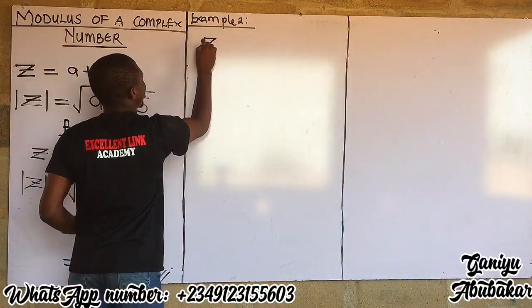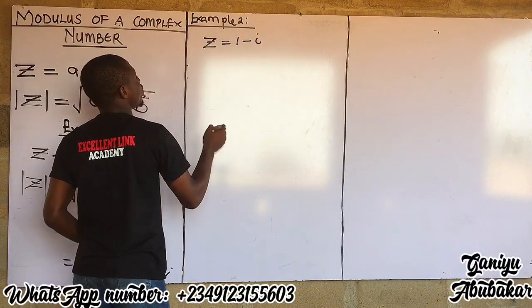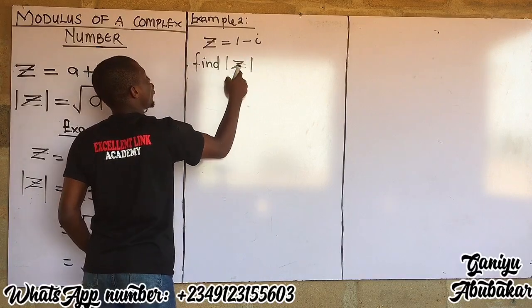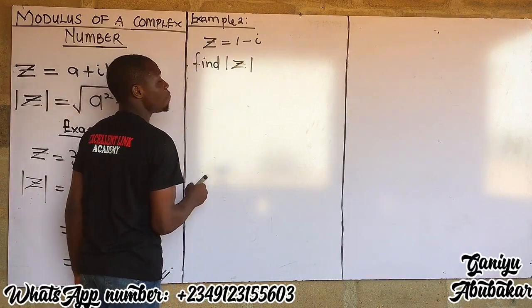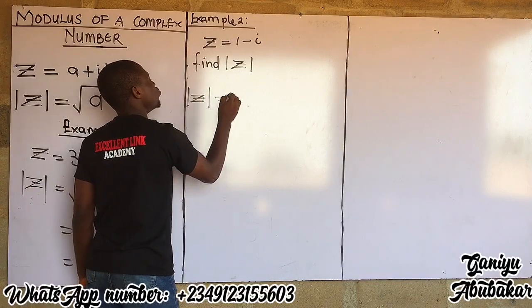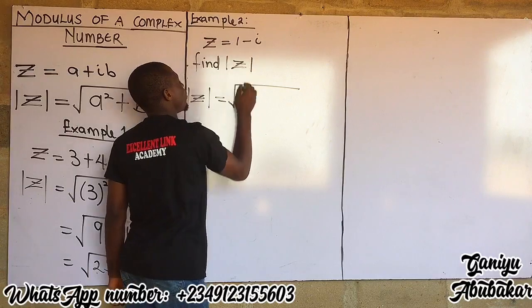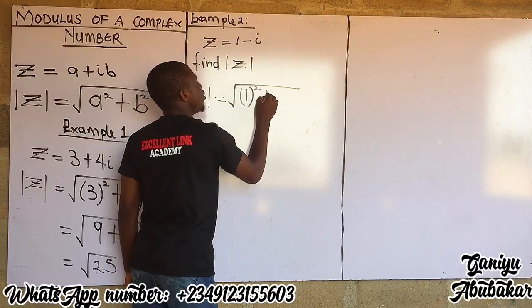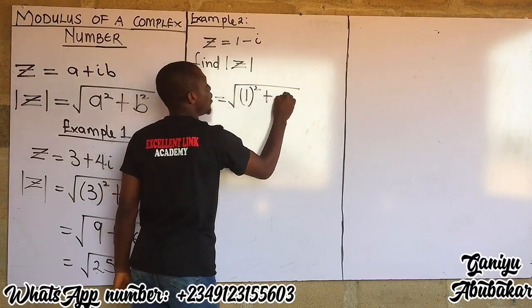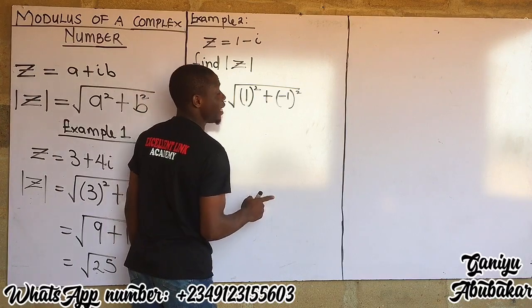Example two: given a complex number z equal to one minus i, find the modulus of the complex number. The approach is the same — take the square root of the real numbers. I have one, which becomes one squared, plus the coefficient of i which is minus one, giving minus one all squared.